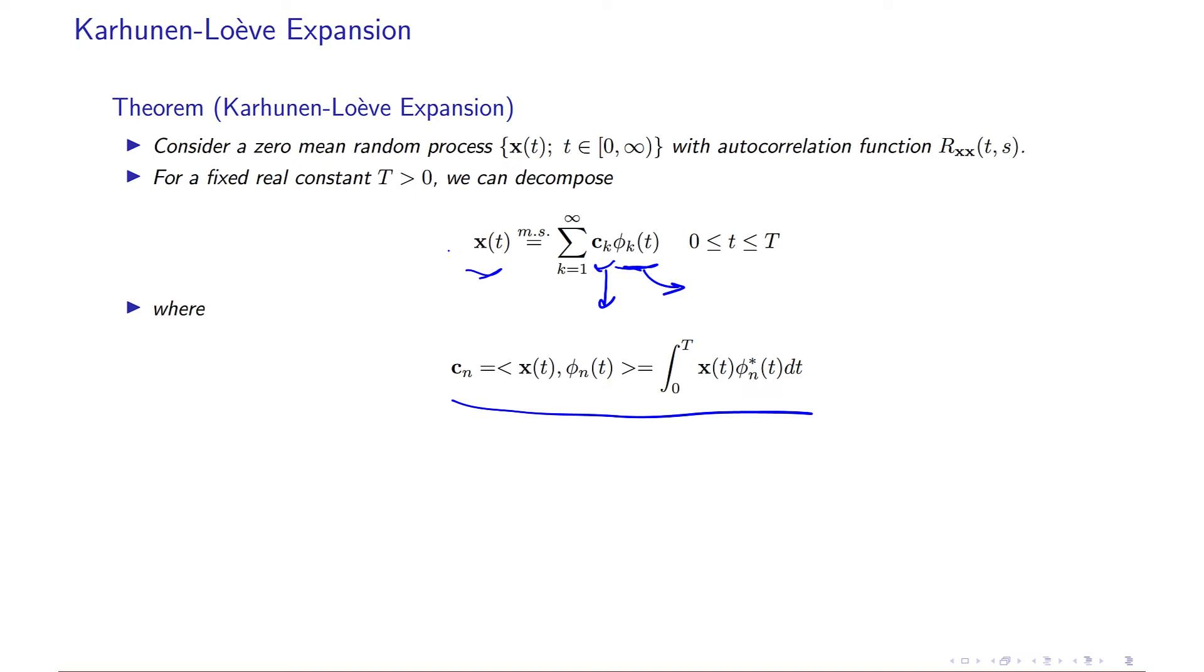So the main thing is this theorem, that x of t can be represented by c k if these phi k t are predetermined.